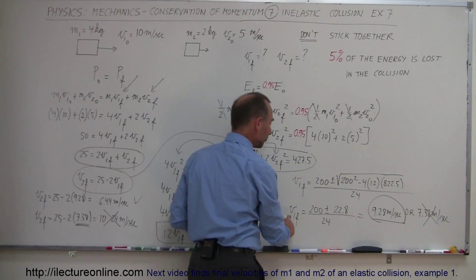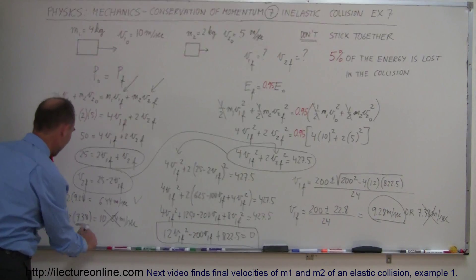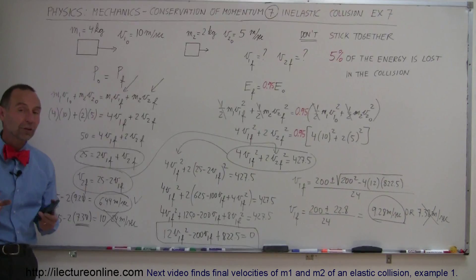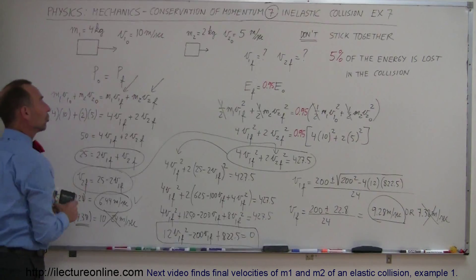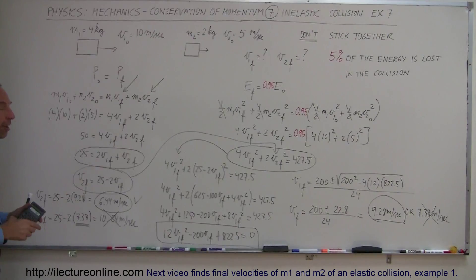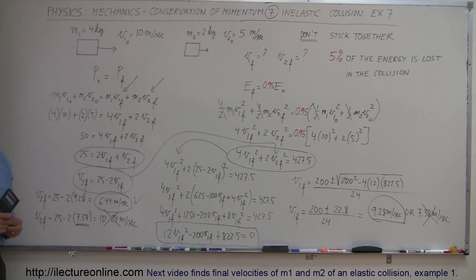So therefore the final conclusion is that if five percent of the energy is lost, V1 final will have this final velocity and V2 final will have this final velocity. And those are the two velocities that meet both conditions that momentum is conserved and five percent of the energy is lost in the collision, which gives you those possible values for V1 final and V2 final. And that's how you do that problem.